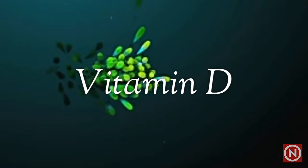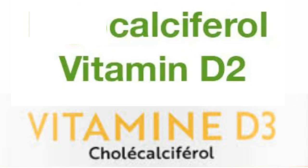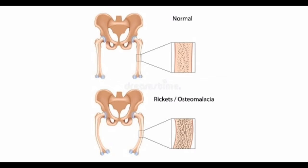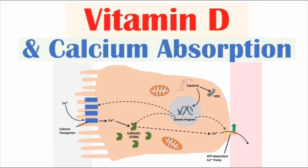Vitamin D: constituents — calciferol D2 and cholecalciferol D3. Deficiency disease — rickets, osteomalacia. Vitamin D is needed for absorption of calcium from the small intestine.